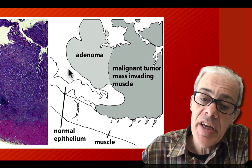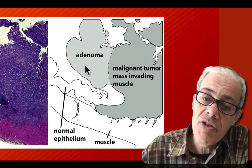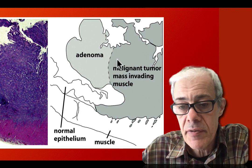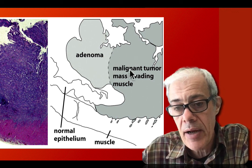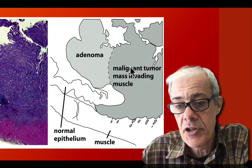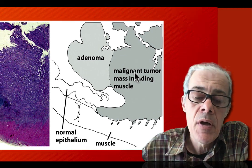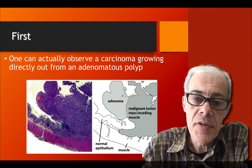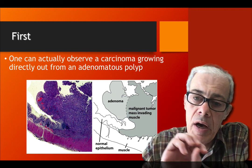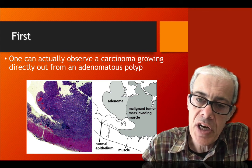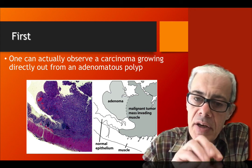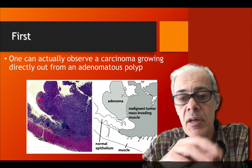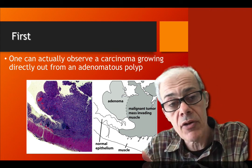The adenoma is growing out of the population of cells that were the normal cells. Changes have occurred giving these cells a growth advantage, and further changes have given rise to a population of cells that have grown into this tissue mass. You can observe in many biopsy samples this succession: one tissue type, then within it another group of cells emerges, and within that emerging population more mutations occur and yet another group of cells emerges.